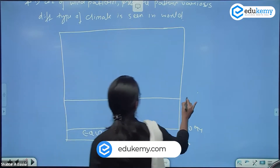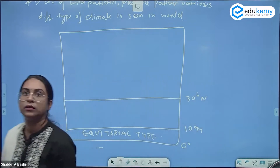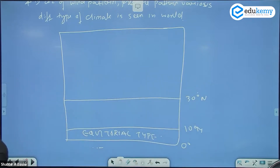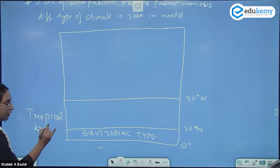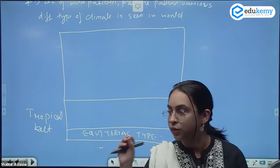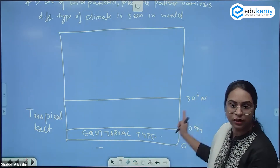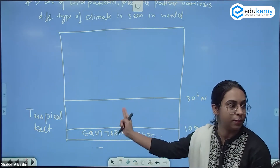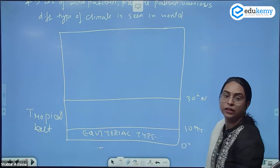From 10 degree to 30 degree north is the tropical belt. In this tropical belt, what kind of winds do we have? We have the trade winds from 30 degree to 0 degree. We studied the trade winds — this is the belt of the trade winds.